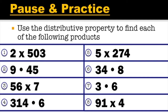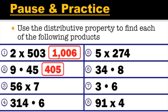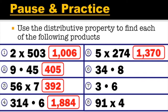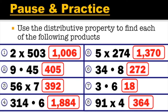So here's your pause and practice. Hit the pause button, try the problems, and when you're done unpause the video. The answers will be displayed. Number one is one thousand six. Number two is four hundred five. Number three is three hundred ninety-two. Number four is one thousand eight hundred eighty-four. Number five is one thousand three hundred seventy. Number six is two hundred seventy-two. Number seven is eighteen. And number eight is three hundred sixty-four.